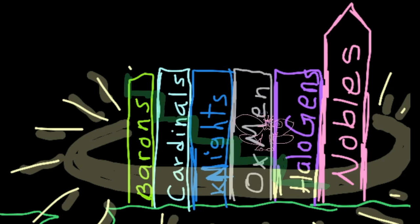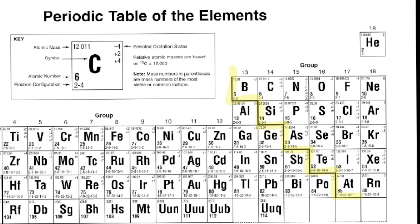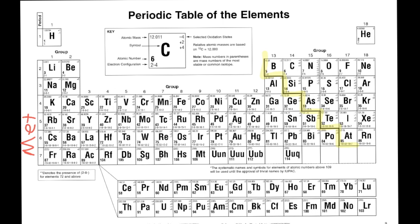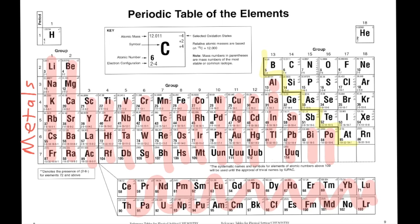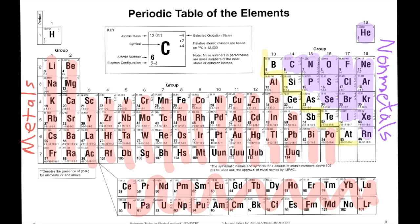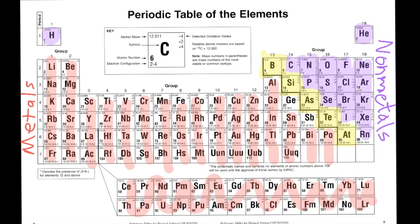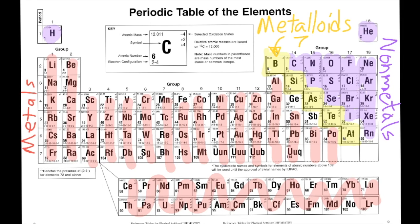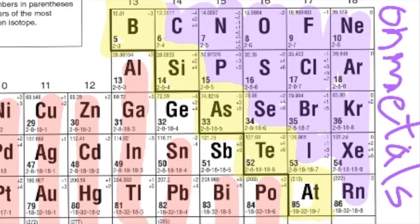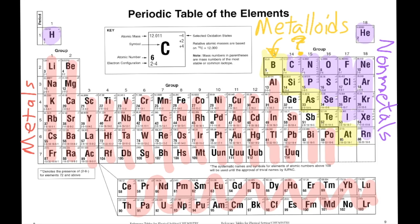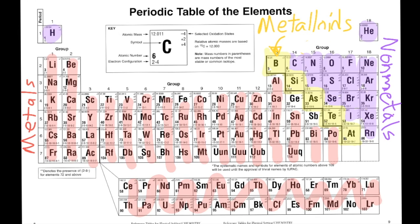The stairs in the fable represent the stair-step line in the Periodic Table. This line separates the metals on the left from the non-metals on the right, and the elements who sit on each stair-step are called metalloids because they sometimes act like metals and sometimes act like non-metals. There are seven metalloids, but with only five stair-steps, where are the other two metalloids? They live under the stairs.